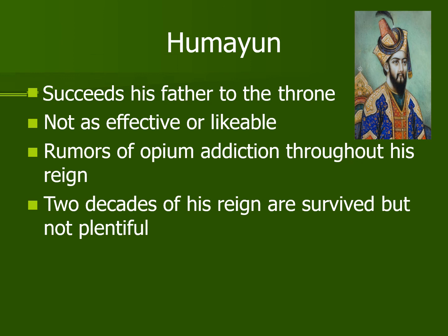After Babur came Humayun, who ruled from 1530 to 1540 and then again from 1555 to 1556. He divided his inheritance according to his father's will, and his brothers were each given a province. The ambitions of his brother Mirza Kamran weakened Humayun's cause against the Afghan competitors. Sher Khan defeated Humayun at Chausa and Kannauj, and he was forced to flee to Iran, where he received help from the Safavid Shah. He recaptured Delhi in 1555 but died the following year after an accident.